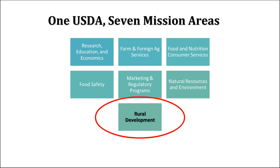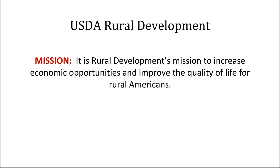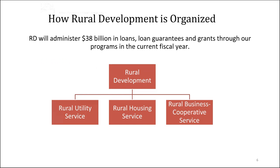We're U.S. Department of Agriculture, divided into mission areas — really just big subdivisions of USDA, which is actually a pretty behemoth federal agency. We are within the Rural Development mission area. What Rural Development does is we try to increase economic opportunities and improve the quality of life for rural Americans, partnering with communities to do community and economic development work. Within Rural Development, we actually have a portfolio that's about $38 billion in loans, loan guarantees, grants, and other various technical assistance programs just within this current fiscal year.